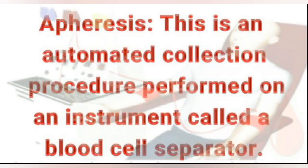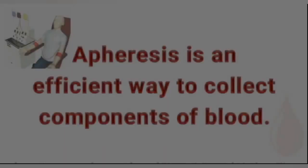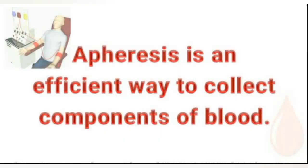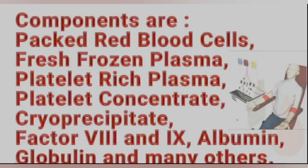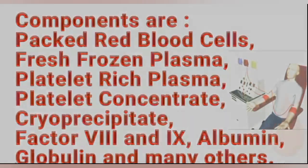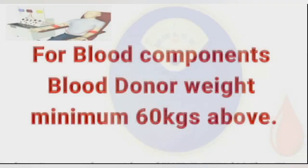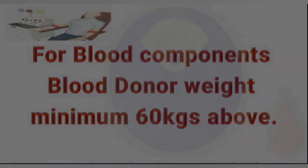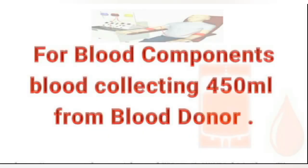Apheresis is an automated collection procedure performed on an instrument called a blood cell separator. It is an efficient way to collect a component of blood. These components are packed red blood cells, fresh frozen plasma, platelet-rich plasma, platelet concentrate, cryoprecipitate, factor 8 and 9, albumin, globulin, and many others. For blood components, the donor must weigh a minimum of 60 kilograms, and 450 milliliters of blood is collected.